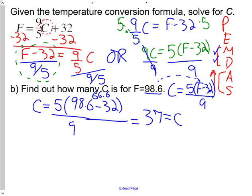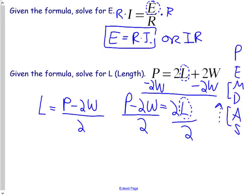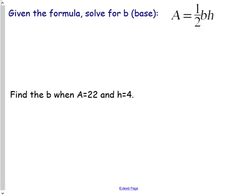We're going to have one more example like this. Given the formula, solve for B, base, and area equals half base times height. And very similar to a previous one we did right here. So we're going to solve for height. So going back, solving for base, we've got to deal with the half and the H.